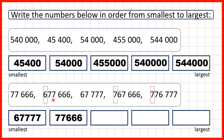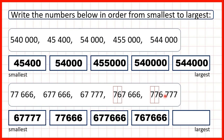Now we're comparing the six-digit numbers that we have left. This number has six in the hundred thousands, but both of our other numbers have seven hundred thousands, so this number here is our next smallest. So now both of these numbers have seven in the hundred thousands, but because this number only has six in the ten thousands but this has seven, we know that this number here is next smallest, and so this number is our largest number.